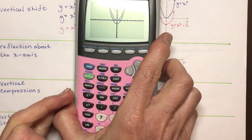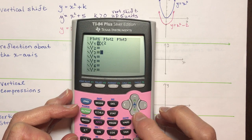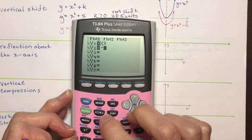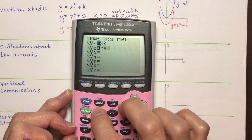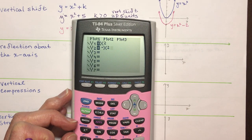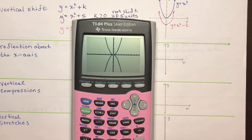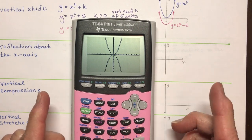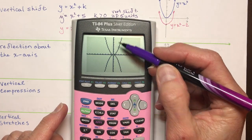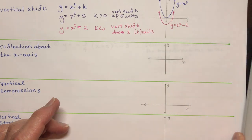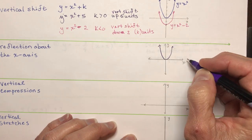The second one is just as easy. We're going to put in negative x squared. We went from being concave up — which we've talked about already — to being concave down. So here's y equals x squared, and here's y equals negative x squared.